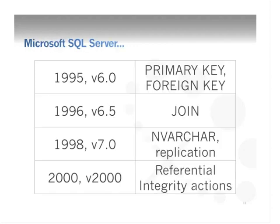In the Microsoft SQL Server world, in 1995 they had their first big release — version 6 — working with Sybase, which came with primary keys and foreign keys. In version 6.5 they enhanced join semantics, giving us both inner and outer joins. In 1998, they added replication and Unicode support. Then in 2000, we got the full set of referential integrity controls — allowing cascading deletes, set null, or set default when referential integrity would be broken.